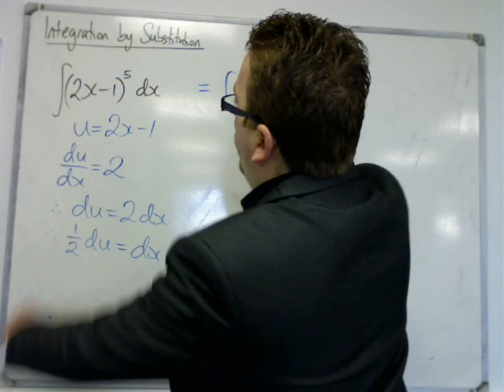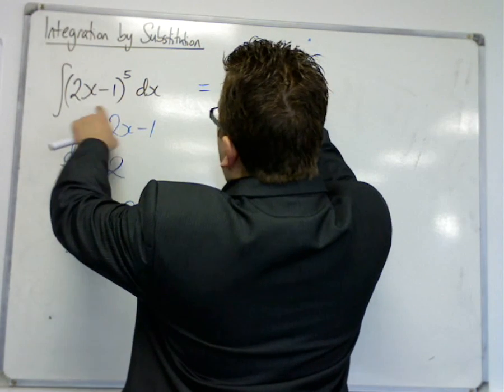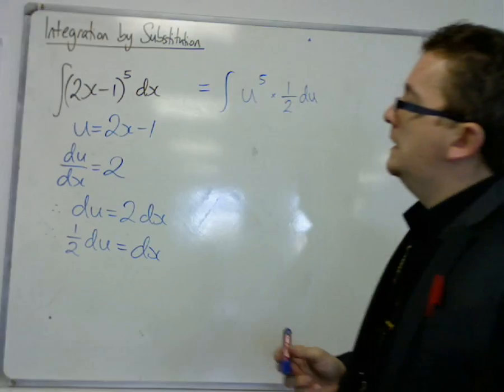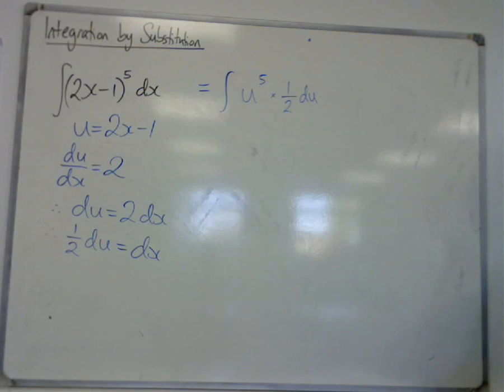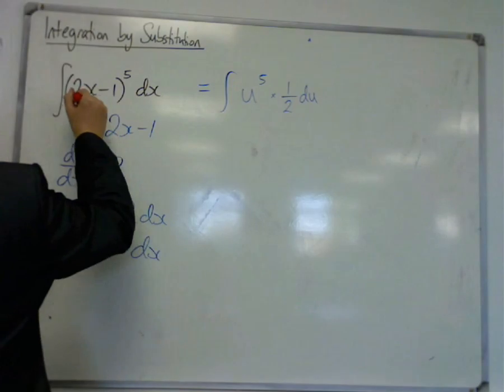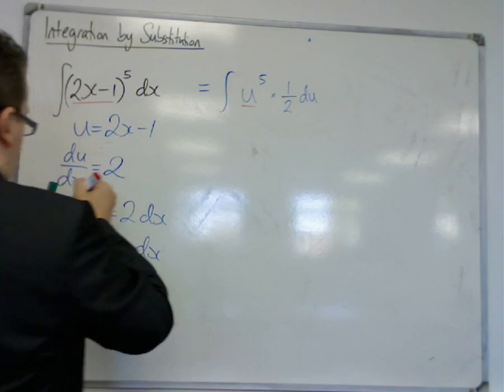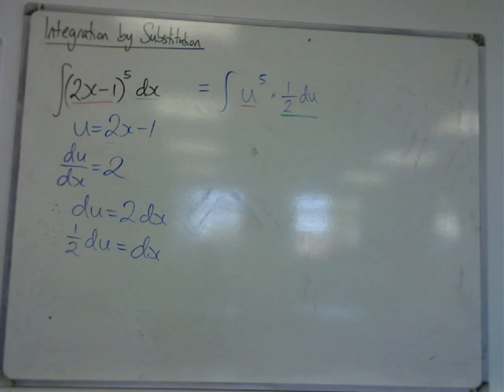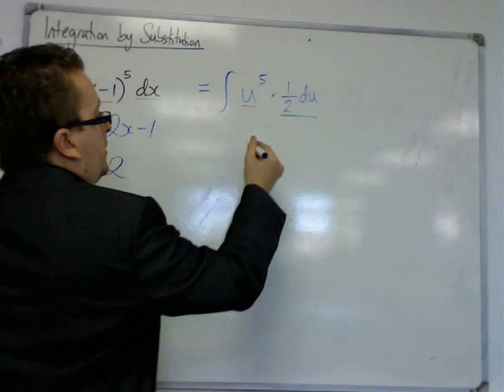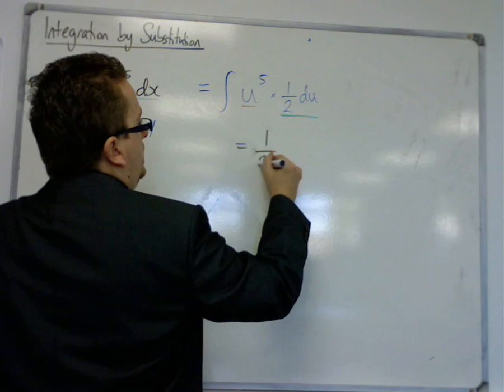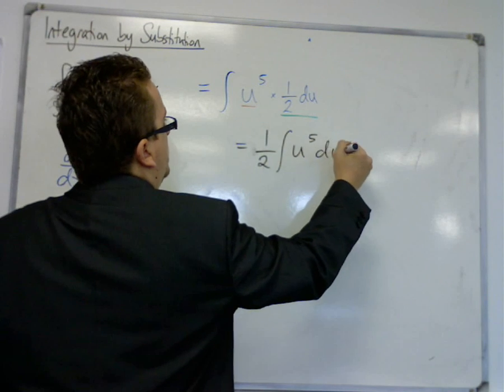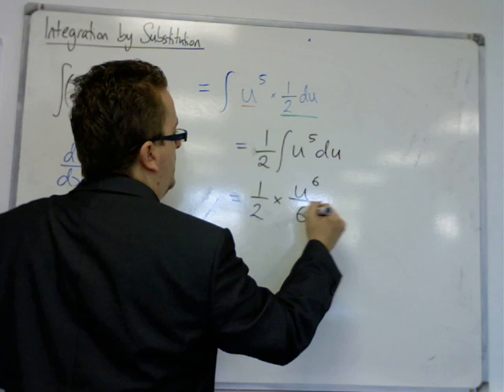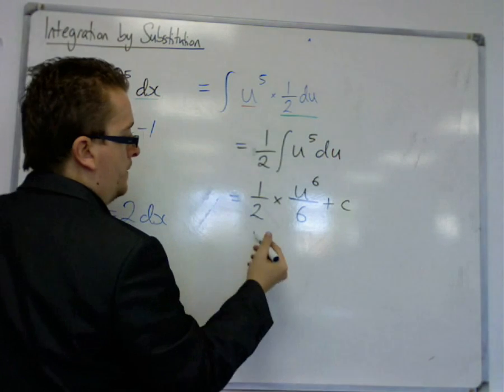So I've now got the integral of u^5 times 1/2 du, because that's the replacement for dx. Now the 1/2 can be brought up front of the integral, and now I'm integrating u^5 du, which is the same as what we had last time. Add 1 to the power, divide by the new power.